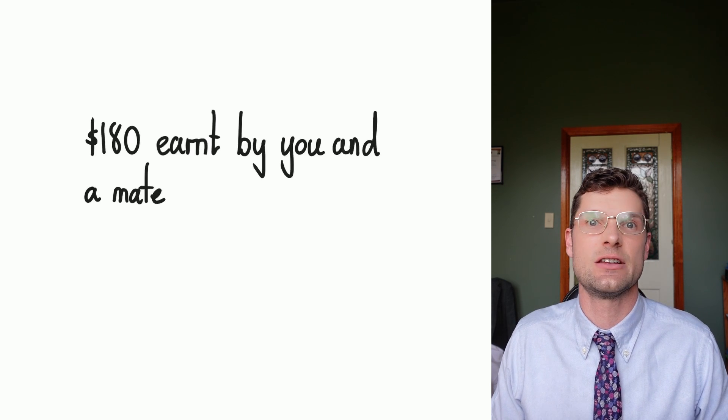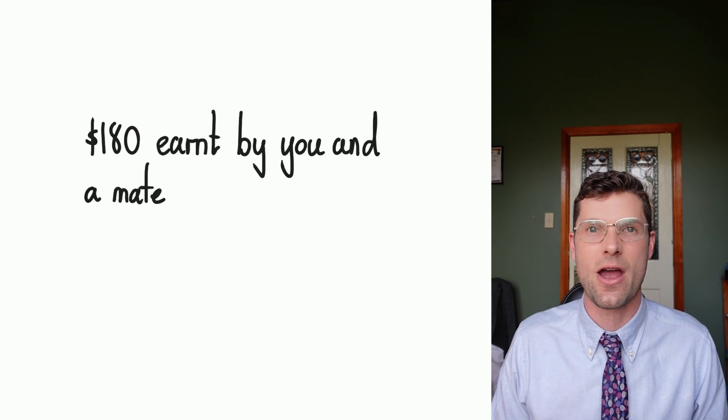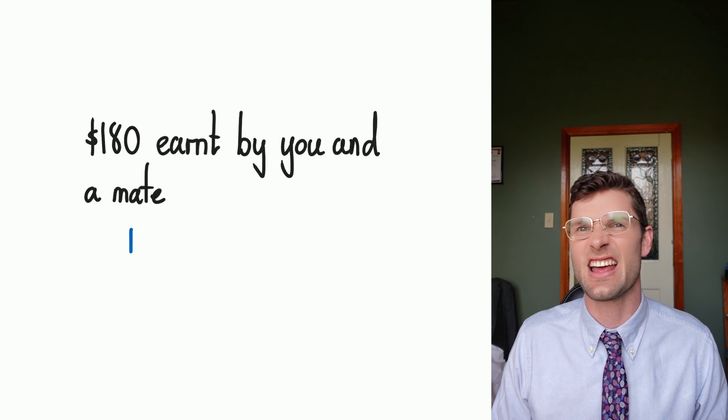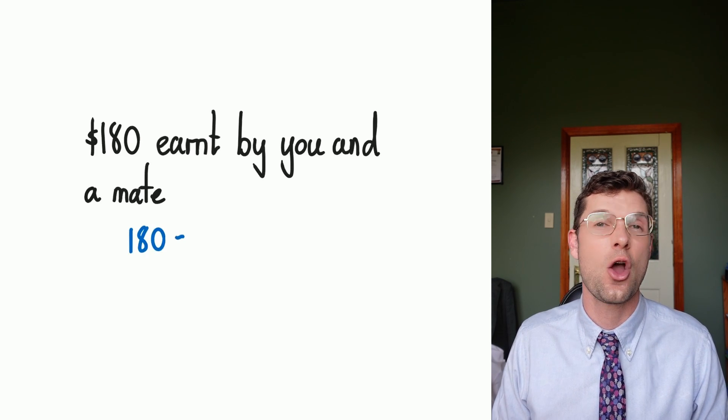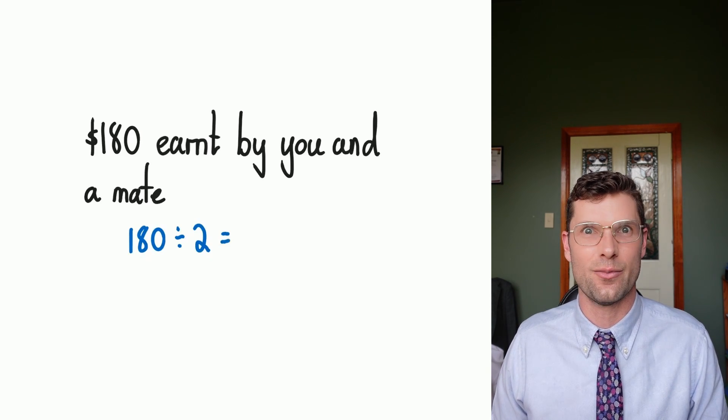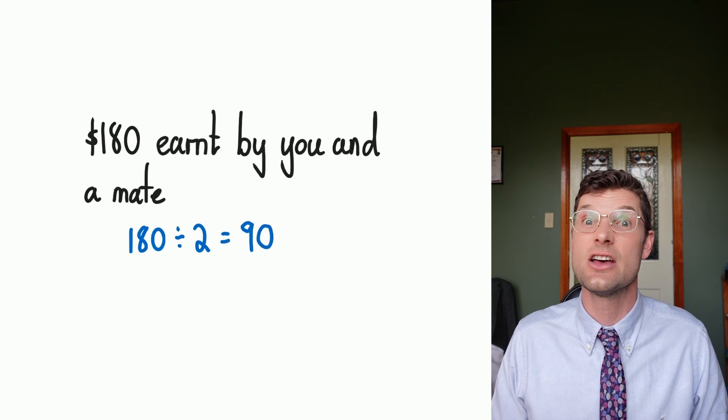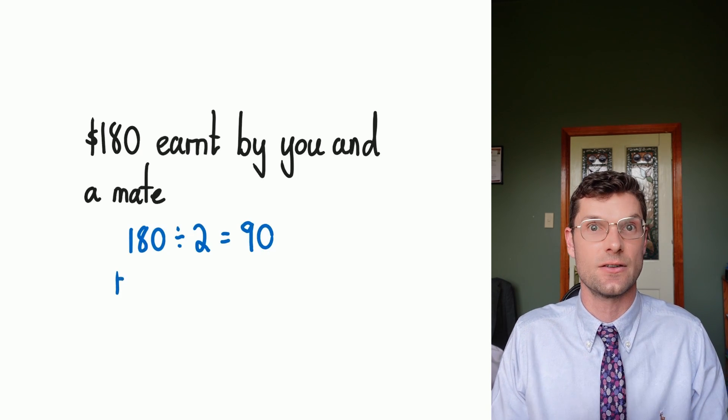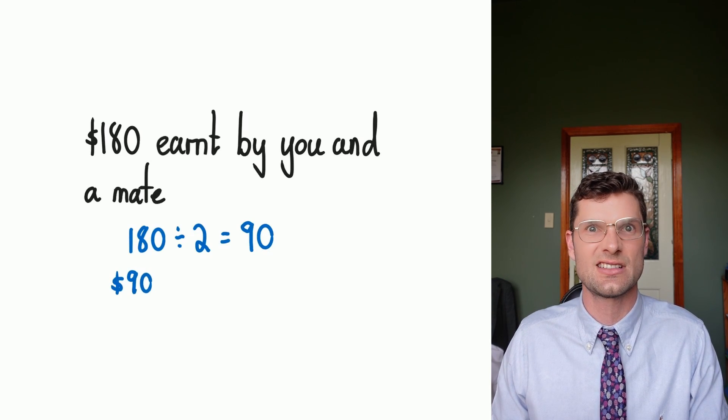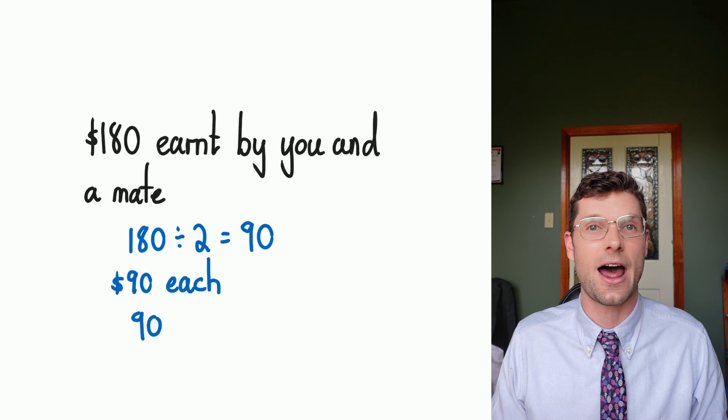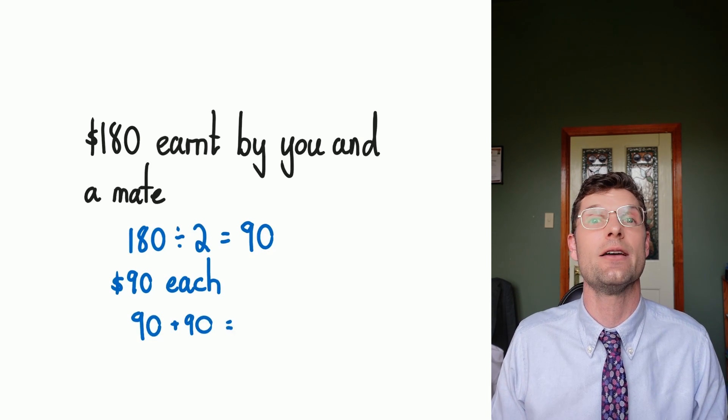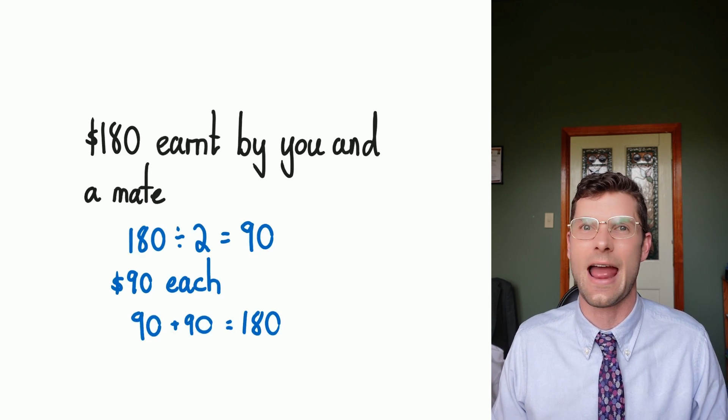This can help us in real life situations. Say if you and a mate work somewhere and you made $180 and you wanna split the cash between you, all you've gotta do is 180 divided by 2, which equals 90. So I'm taking 180, dividing it into two even groups, which equals 90. 90 plus 90 is 180. Everybody walks away with the exact same amount of money. Happy days.